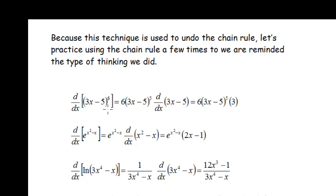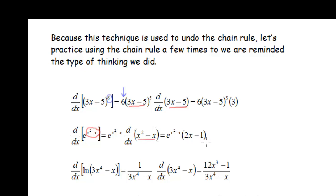If we were trying to take the derivative of (3x minus 5) to the 6th power, the first thing we do is bring the exponent of 6 down in front. We have (3x minus 5) and then multiply by the derivative of what was inside — so we get 6(3x minus 5) to the 5th times 3. For the second example, the inside function is in the exponent, giving us e to the (x squared minus x) times (2x minus 1). And for the natural log, we have 1 over what was inside the log times the derivative of the inside.